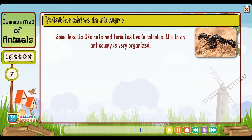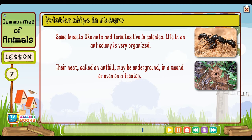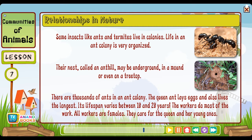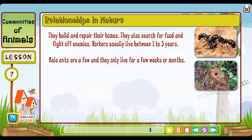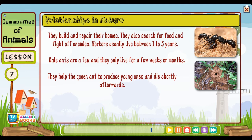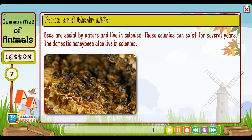Some insects like ants and termites live in colonies. Life in an ant colony is very organized. Their nest, called an ant hill, may be underground, in a mound or even on a tree top. There are thousands of ants in an ant colony. The queen ant lays eggs and lives the longest — her lifespan varies between 10 and 20 years. The workers, who are all females, do most of the work: they care for the queen and her young ones, build and repair their homes, search for food and fight off enemies. Workers usually live between one to five years. Male ants are few and only live for a few weeks or months — they help the queen to produce young ones and die shortly afterwards.